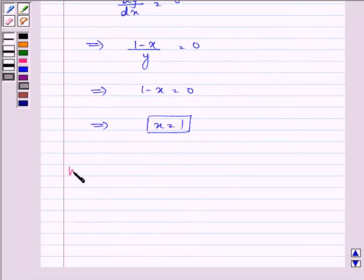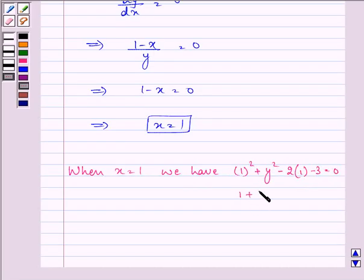So we have when the value of x is equal to 1, we have 1 square plus y square minus 2 into 1 minus 3 equal to 0. That is 1 plus y square minus 5 equal to 0, which gives us y square is equal to 4, or we have the value of y as plus minus 2.